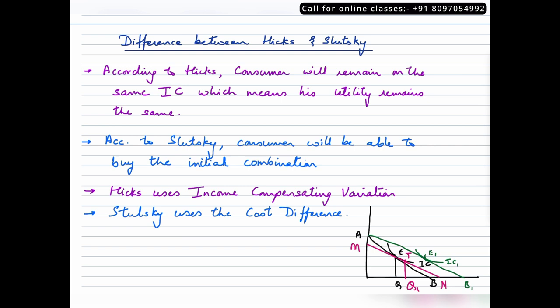So the consumer would more or less remain on the same IC curve. However, according to Slutsky, we'll take a look at the diagram in the next video. He proposes that the consumer should be able to buy the initial combination, which is E. We'll see when we draw the diagram whether the consumer does buy E or not. Another difference is the method that Hicks uses is called income compensating variation, whereas the method used by Slutsky is called cost difference.